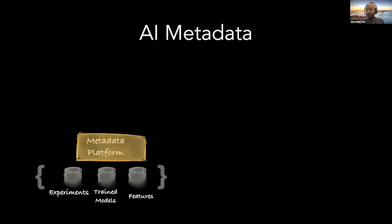Something interesting happened — the AI team started saying they need a bunch of things: explainability, reproducibility. They've got a bunch of model training stuff going on and need a place to store it. We told them we've built this thing called GMA — it allows you to store metadata, and you might want to use it. They actually went all in on it. So we have the metadata platform extending to support experiments, metadata around experiments, metadata around model training, and metadata around features.